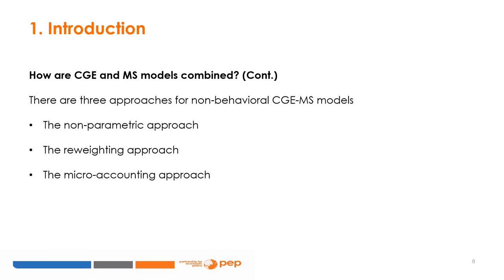Three approaches for non-behavioural CGE-MS models are proposed: the non-parametric approach, the re-weighting approach, and the micro-accounting approach. The non-parametric approach applies a random selection of employment statuses depending on changes in the aggregate labour market conditions. The re-weighting approach consists of altering the sample weights in the MS model in order to reproduce changes in employment and other population variables from the CGE model. The micro-accounting approach assesses the immediate or short-run effects of price changes transmitted from the CGE to the MS model, for example before agents adjust their behaviour.